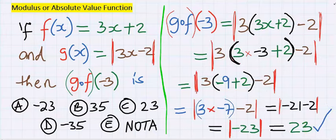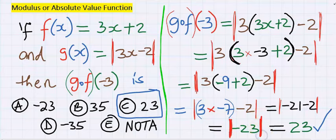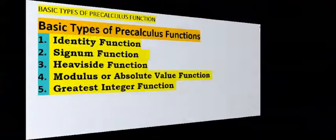The answer is 23, which is option C. You can see that this absolute value removed the negative.